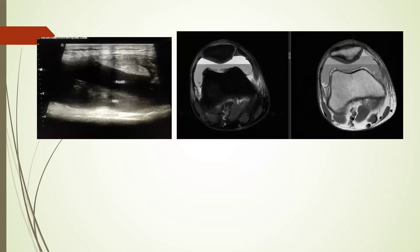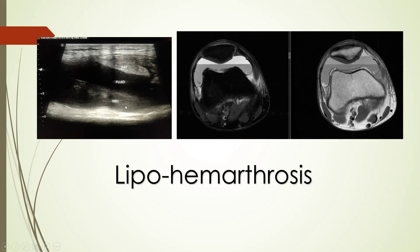We can also see lipohemarthrosis on ultrasound, where fat is lighter than fluid and blood so it floats in the anterior non-dependent region, then comes the fluid, then the blood. Lipohemarthrosis develops when there is a fracture that communicates with the articular surface.